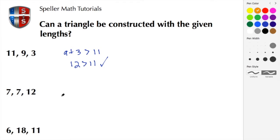Let's move on to the next example. Here the two shorter lengths are 7, so we're going to use the 7 plus the 7 and that should be greater than 12.